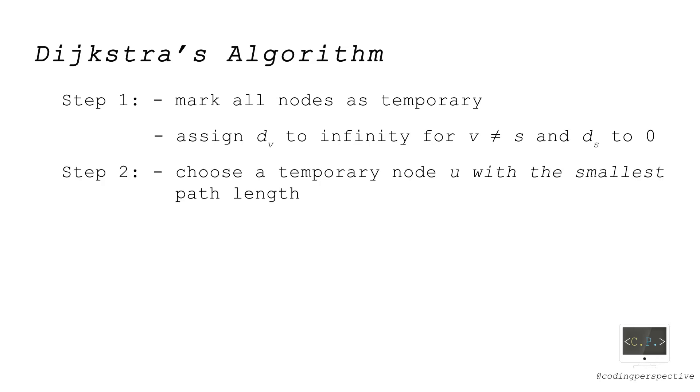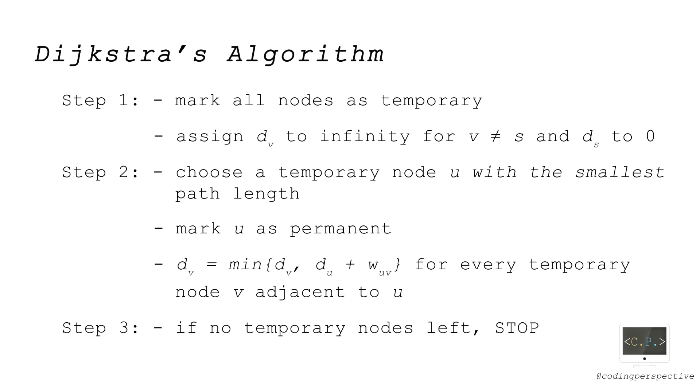In the second step, we first choose the temporary node with the smallest path length. Let's call this node u and mark u as permanent. Then we update the path length for every temporary adjacent node to u as follows. This is the step where we use the principle of optimality, so the recursion. In the last step, we stop if there is no temporary node left. Otherwise we go to step two.